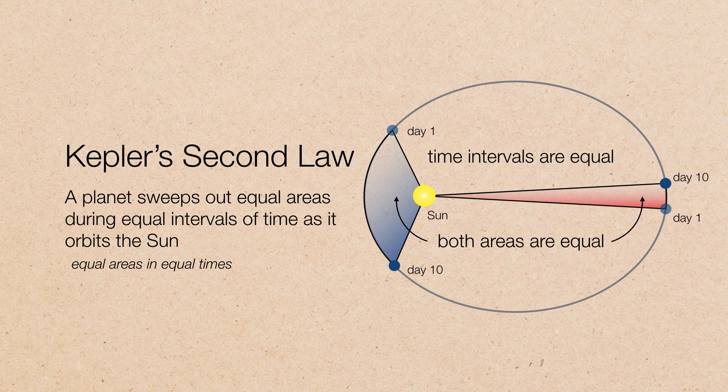Therefore, Kepler's second law states that a planet sweeps out equal areas during equal intervals as it orbits the sun. And there's another implication here. In order for the perihelion interval to equal the aphelion interval, the rate at which the planet is moving during perihelion must be faster, and the rate at which the planet moves during aphelion must be slower. So a planet speeds up as it approaches perihelion and slows down as it approaches aphelion.